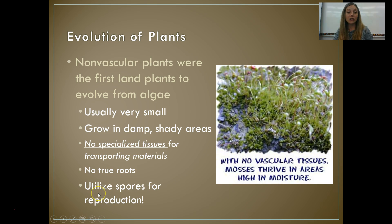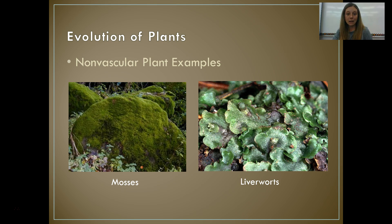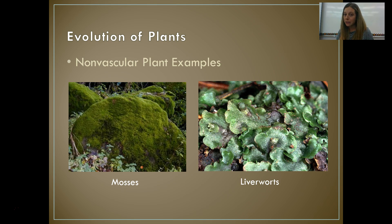They also don't have true roots, so since they don't have vascular tissue and they don't have true roots, they have to grow very low to the ground where moisture is available. They still use spores for reproduction — we haven't evolved seeds yet, so these are plants that reproduce with spores. Our most common example is mosses, but there are also plants called liverworts. These are examples of non-vascular plants — they are true plants with tissues and organs, but they don't have specialized vascular tissues for transporting materials.